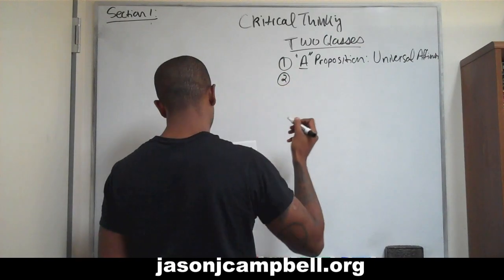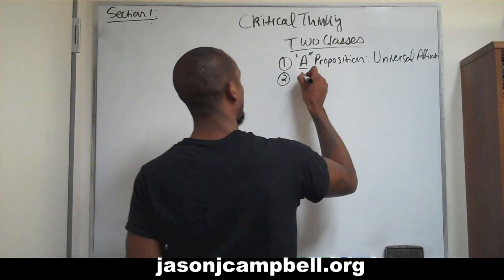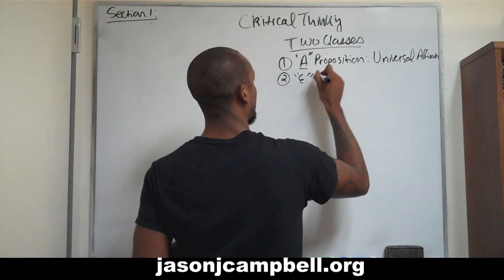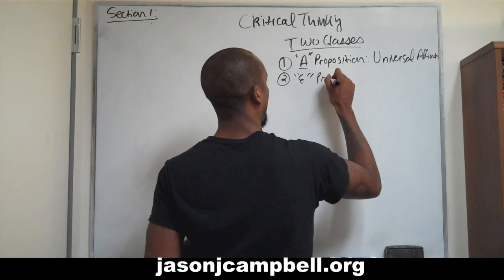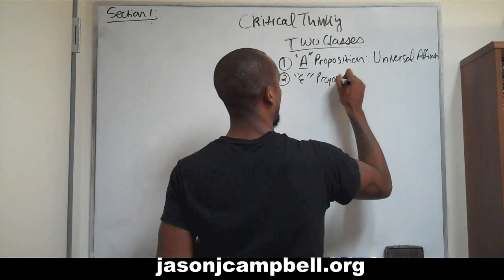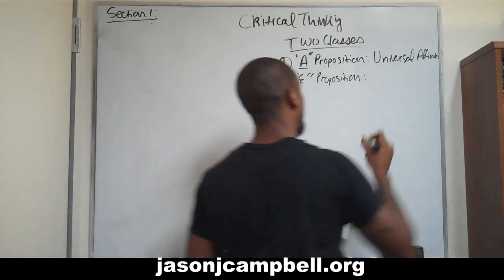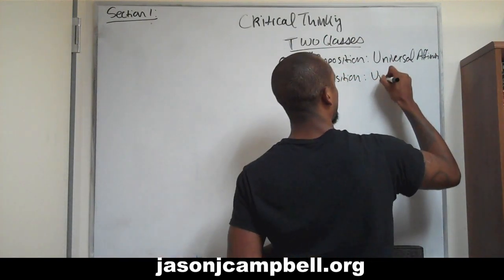The second is called the E proposition, and this is known as the universal negation.